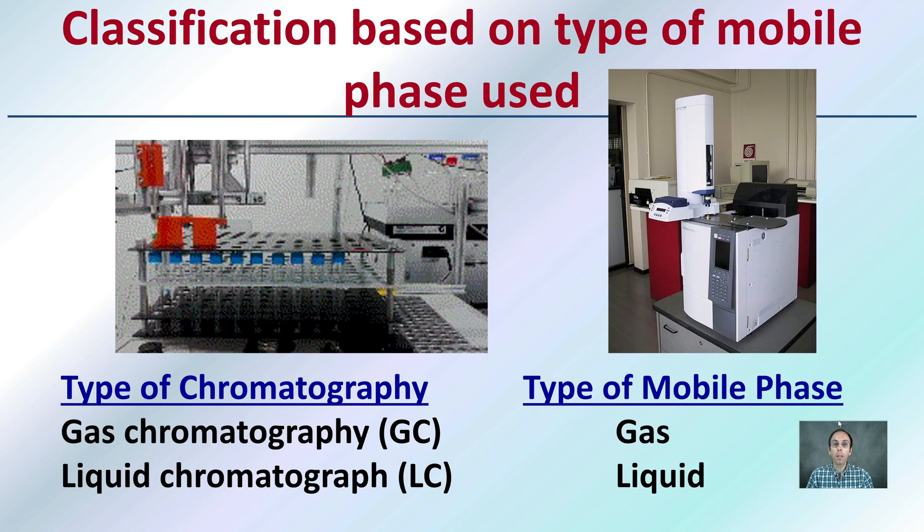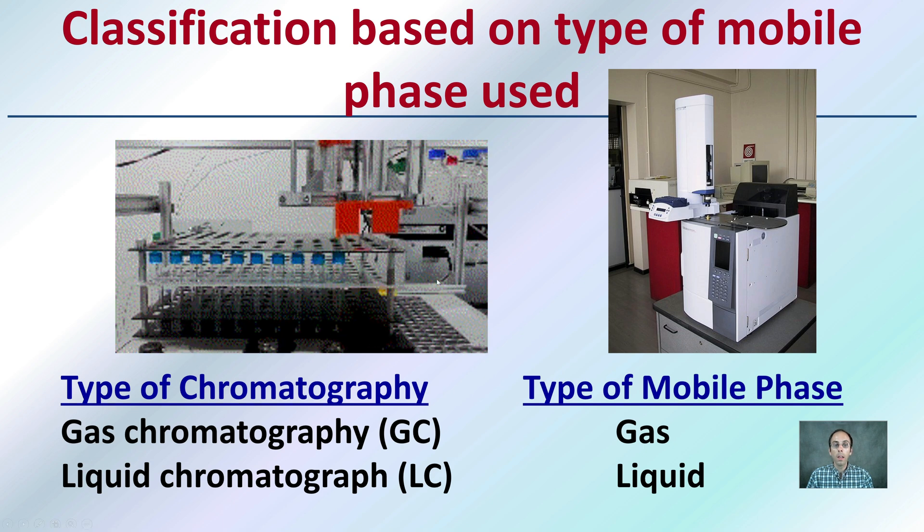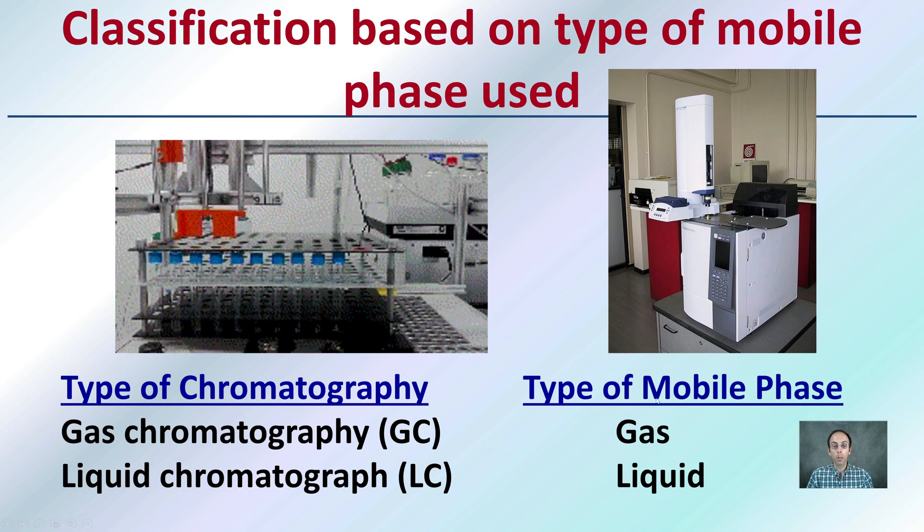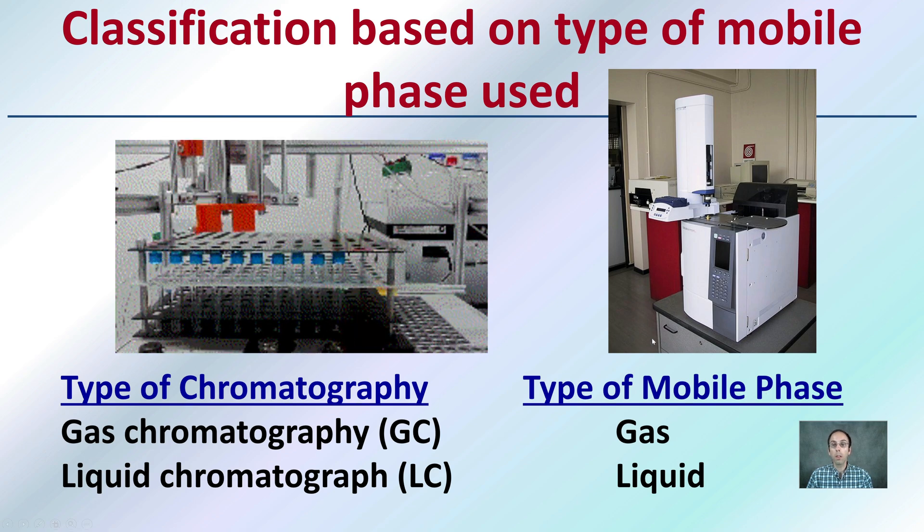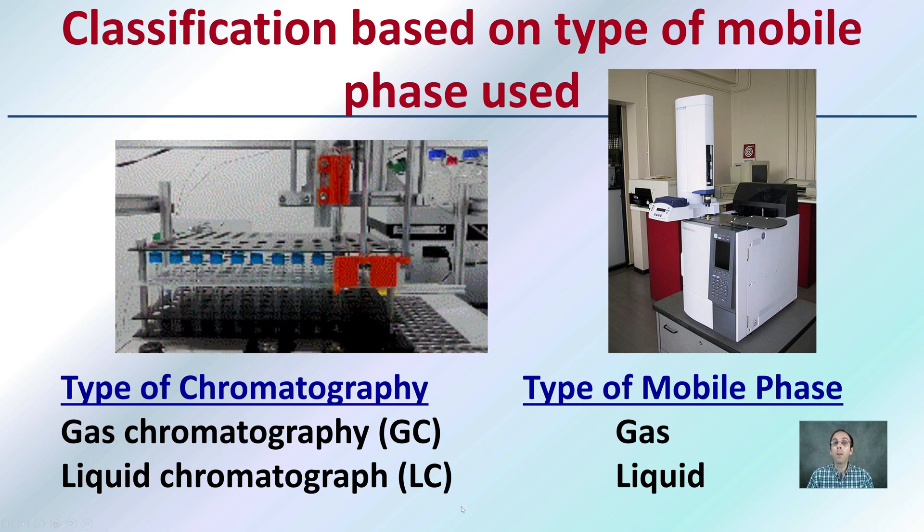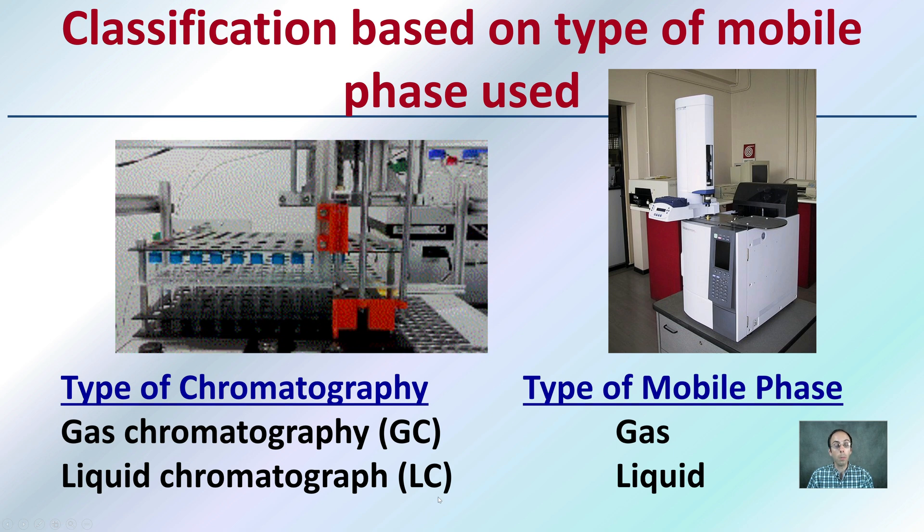Those classifications are based on the mobile phase used—gas chromatography or liquid chromatography. We can automate some of these. The type of mobile phase, whether it's a gas or a liquid, and we have machines that allow for a very high degree of precision and repeatability.